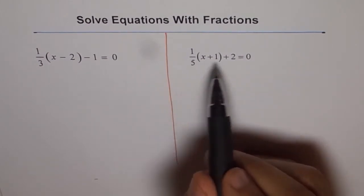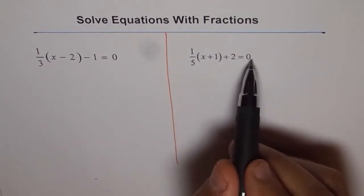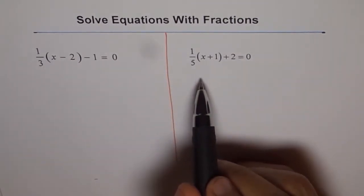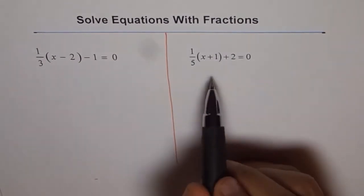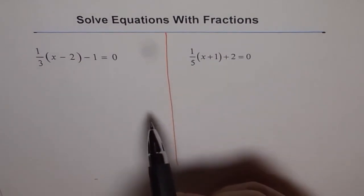So we will get rid of this term from here. We get x plus 1 equals to minus 10 and then we will take away 1. So minus 10 minus 1, minus 11 is the expected answer for this question.